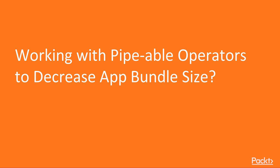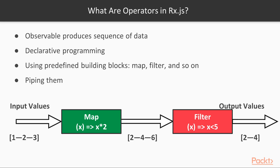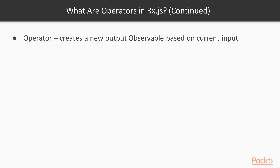Before we learn the main topic of that video — working with pipeable operators — we should first find out what operators really are. Observable produces a sequence of data, and we can subscribe to fetch it. But what if we need to do some modifications to initial data before we feed them to some component HTML template? As you may remember, RxJS implements a declarative programming paradigm. It means that each value can be transformed with a predefined function, or as we name it in RxJS, operators. Let's review the definition of operators from the ReactiveX project.